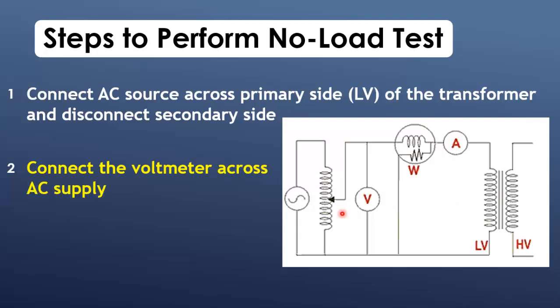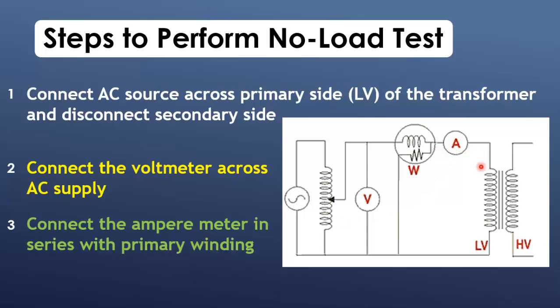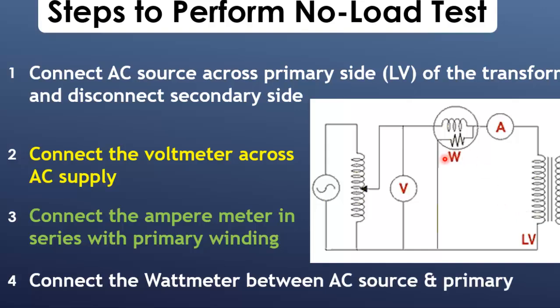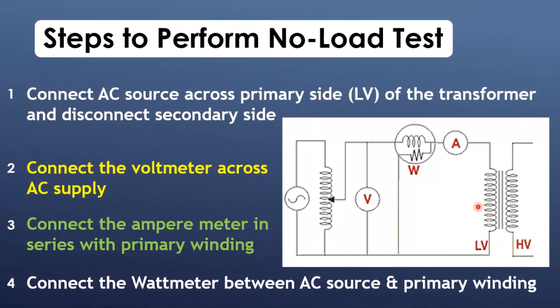Connect the voltmeter across AC supply. Then connect the ammeter in series with primary winding. Now connect the wattmeter between AC source and primary winding of transformer.